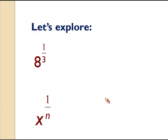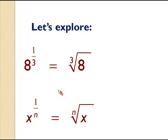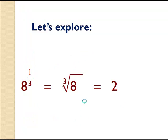So let's explore. We have 8 raised to the 1 third, and you can see that my x is 8. So where I have x, I replace that with an 8. My n is 3, so I replace the n with 3. And now I have the cube root of 8. Now we know the cube root of 8 is 2 because this is really asking me, what number multiplied by itself 3 times gives me 8? The answer is 2, because 2 times 2 times 2 is indeed 8.